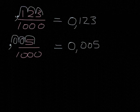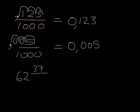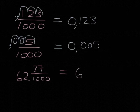If we have something like 62 and 37 thousandths, well, we know that we have the 62 before the comma. Now we've just got to figure out what we do after the comma. Well, 1, 2, 3 zeros,